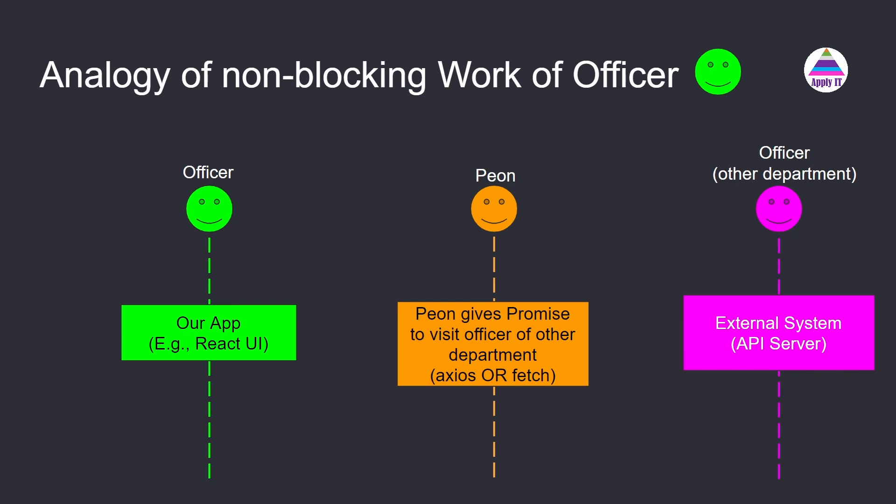When we make a synchronous call, the caller will get data but only after some time. When we make an asynchronous or non-blocking call, the caller will not get data immediately — the caller will get a promise, and after some time, when data becomes available, the promise will get resolved and the caller will get the data. In the next video we will understand what is the concept of promise and how it is used in making an API call. Thanks for watching and happy learning.